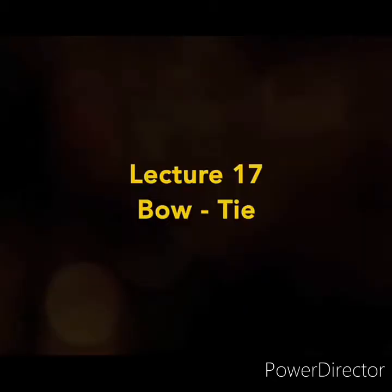Let us start another concept which is known as bow tie. Bow tie is not a new thing — it is basically a combination of fault tree and event tree, but it gives the holistic picture from the basic event failure to the accident scenarios at the end state. That is why in the past couple of years this has become very popular. I want to explain this bow tie concept primarily with examples, because the basic principles underlying the bow tie — that is, fault tree and event tree — have already been discussed.